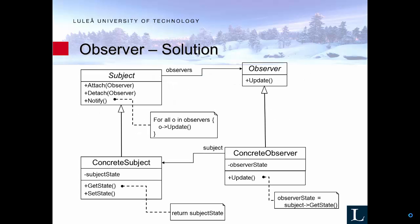Looking at the UML, we have an observer that can perform updates, and a subject which is being observed. Here you have the attach or add listener, the detach or remove listener, and the notify method. When you attach a listener you add it to a list or vector, and whenever you call notify you go through this list and call update on each of the observers.